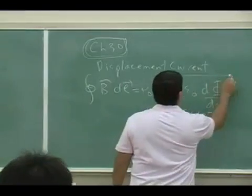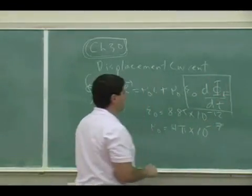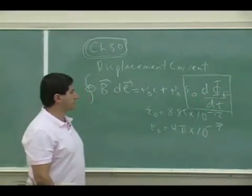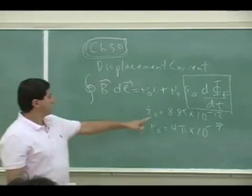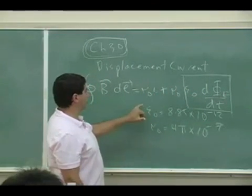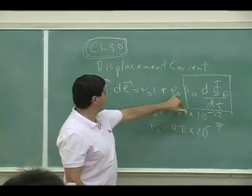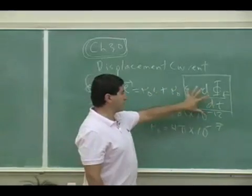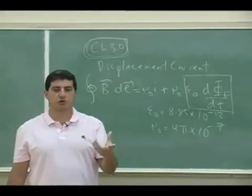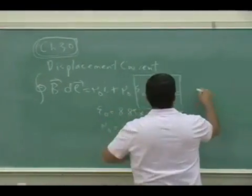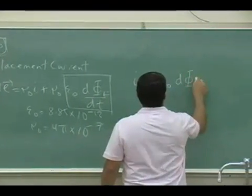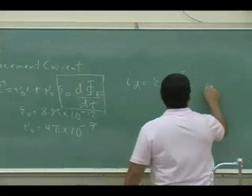This part of it, just this part of it, what units should that have? The part that is in the box. That should have the same units as current, right? Because unit wise it only makes sense. If this is mu zero and this is mu zero, this is current, this is current, whatever this thing means, it has to be something that has units of amps. This is known as displacement current.